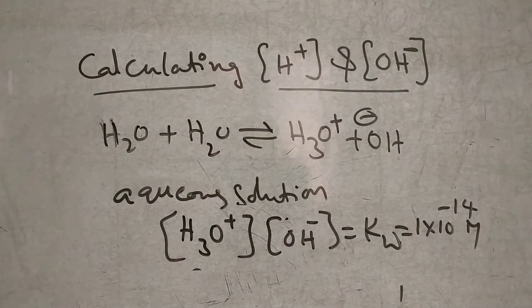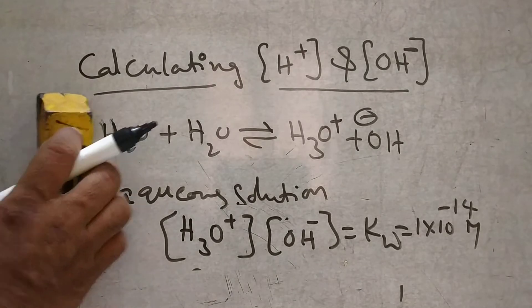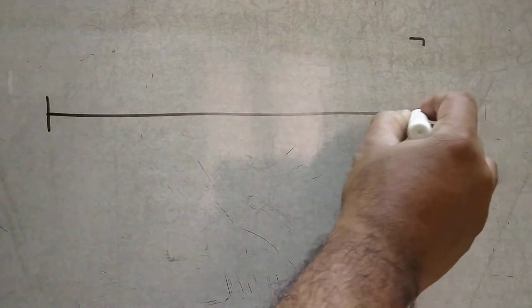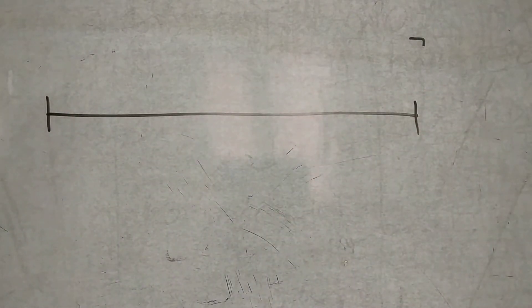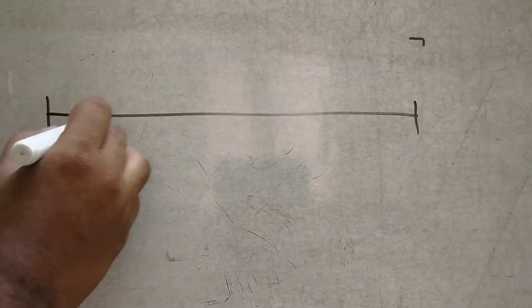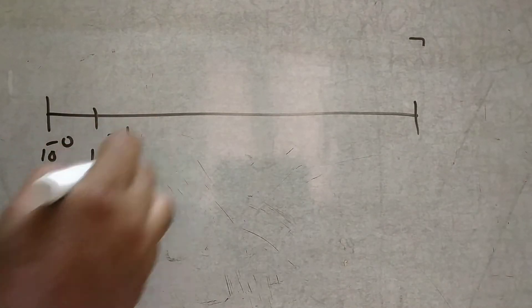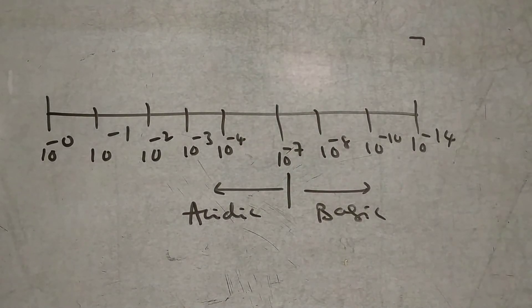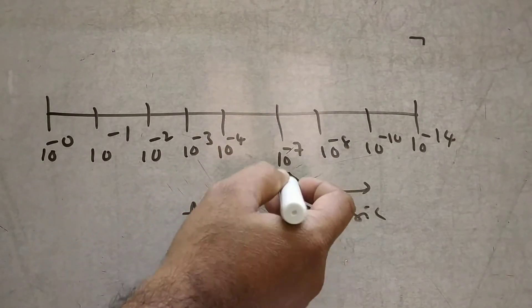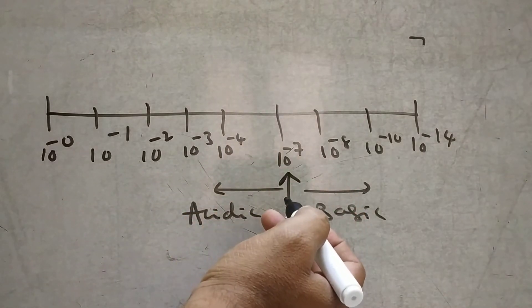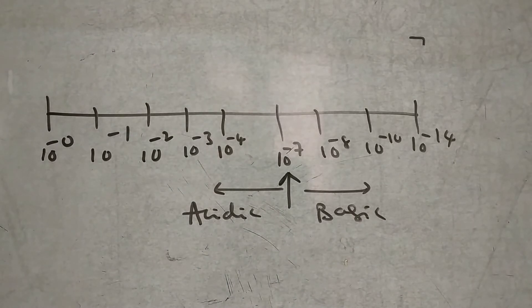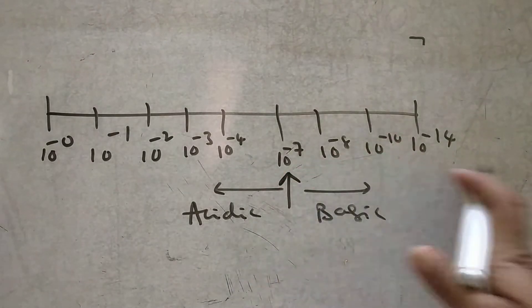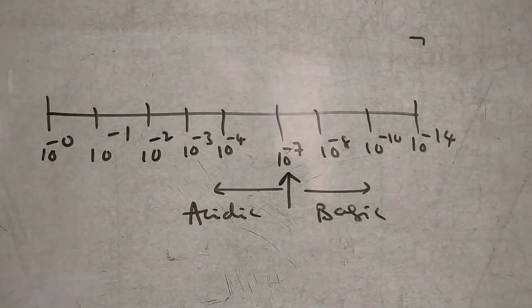Generally, in the pH scale it contains 1 to 14. If 10 to the power of minus 0, 10 to the power of minus 1, up to 10 to the power of minus 14 — so 7 is neutral. From 10 to the power of minus 7 to the left side, we can call it as acidic. From 10 to the power of minus 7 to the right side, we can call it as basic in nature.